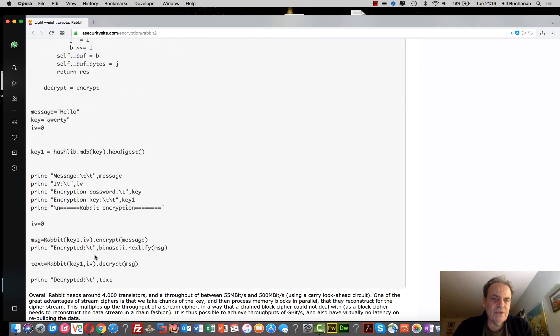The research paper is also on a link. You can see that we're creating the key here, and then all we're doing is using the Rabbit method to encrypt the message, and then we'll decrypt it back again.